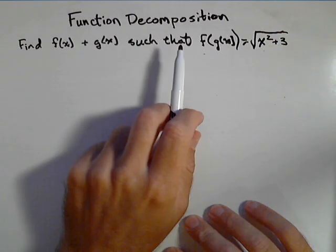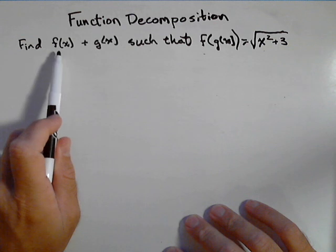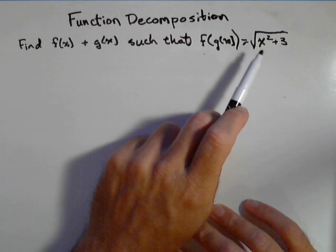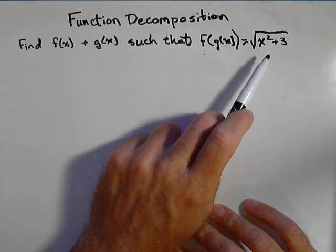Our goal in doing function decomposition is to find two functions f of x and g of x such that when composed together, we get a particular function. In this case, square root of x squared plus three.